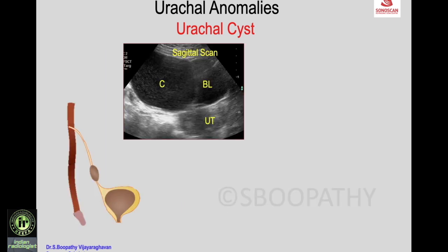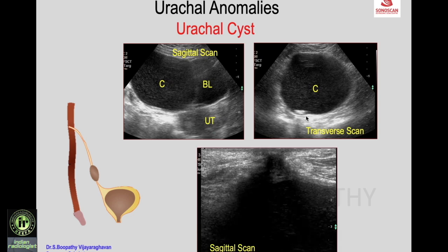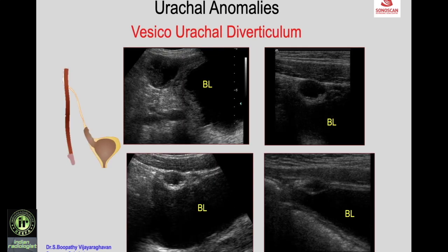A urachal cyst may be closer to the bladder. In an adult female, a large cyst is seen indenting on the bladder. Transverse scan shows the cyst with a calculus. High-frequency scan confirms the cyst is continuous with the umbilicus, confirming a urachal cyst; due to its size it also indents the bladder.